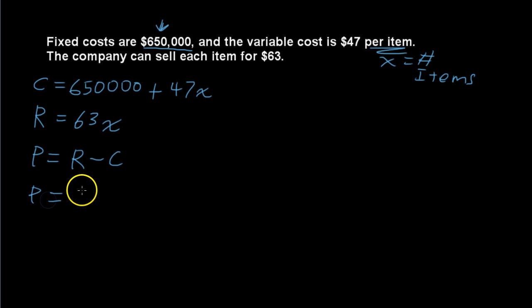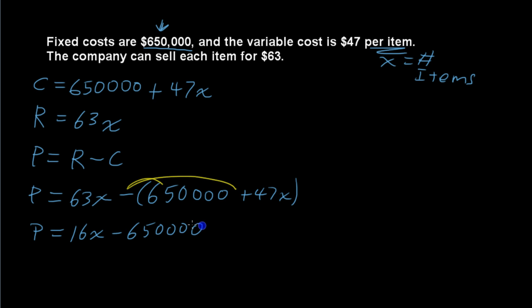The profit then equals 63X minus that $650,000 plus 47X. Make sure you then distribute this negative sign, and that gives you that the profit equals 63 minus 47 is 16. 16X minus $650,000.